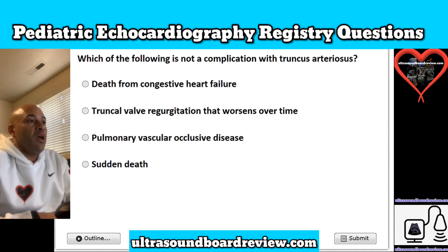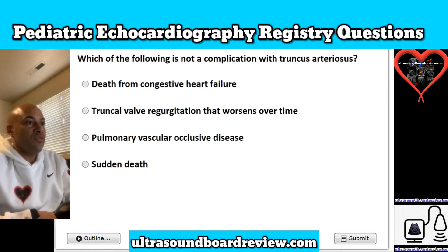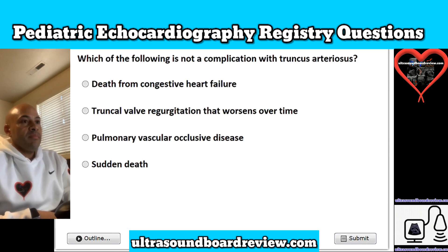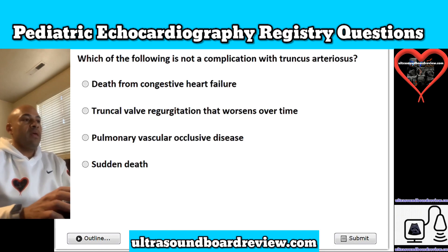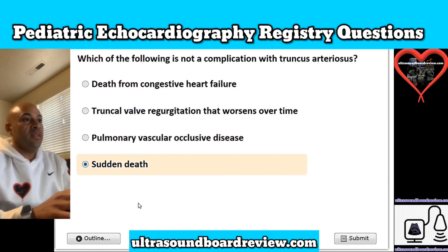Question 24. Which of the following is not a complication with truncus arteriosus? Is it A, death from congestive heart failure; B, truncal valve regurgitation that worsens over time; C, pulmonary vascular occlusive disease; or D, sudden death? The answer is D, sudden death. Sudden death is not a complication with truncus arteriosus.